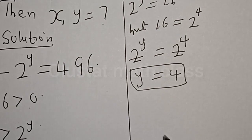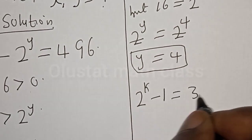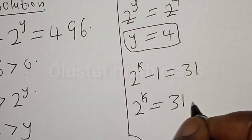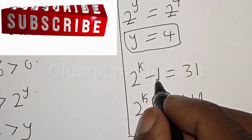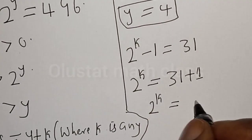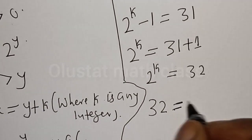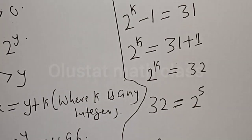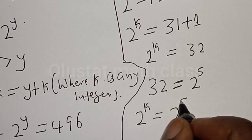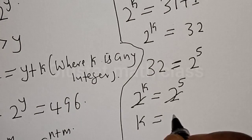Now from the second equation, 2 raised to power k minus 1 is equal to 31. Then 2 raised to power k is equal to 31 plus 1, which is 32. And 32 can be expressed as 2 raised to power 5. Therefore, 2 raised to power k is equal to 2 raised to power 5, and they have the same base, so k is equal to 5.